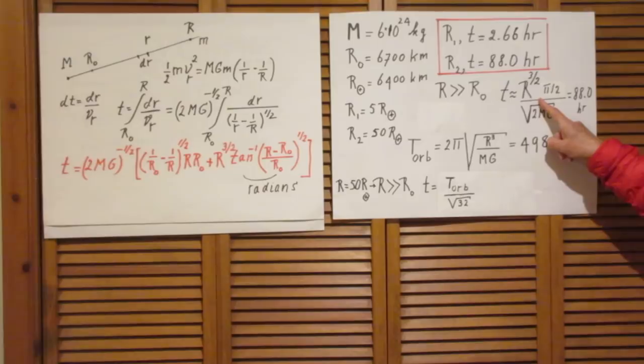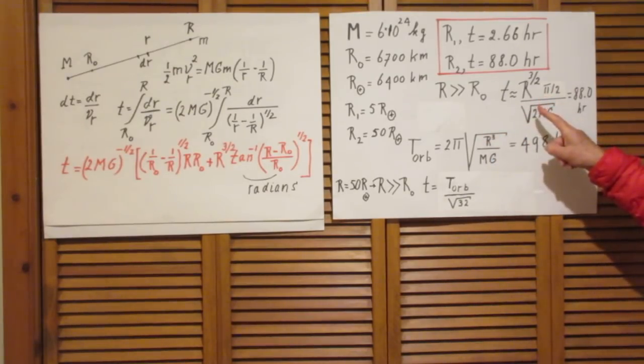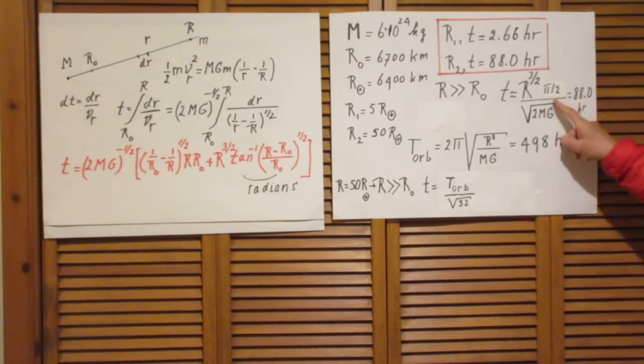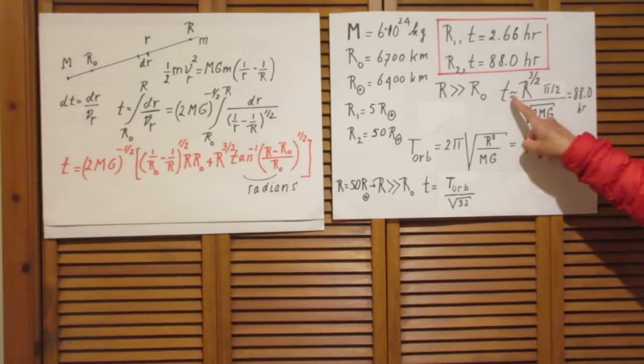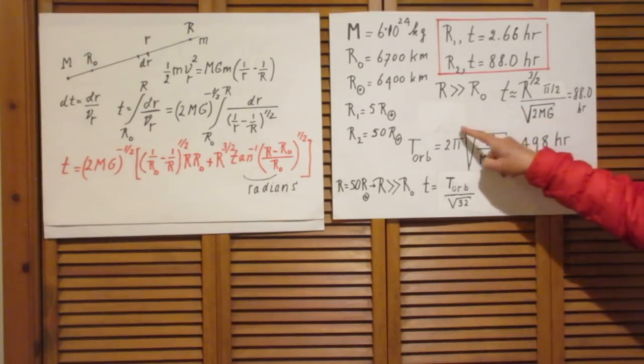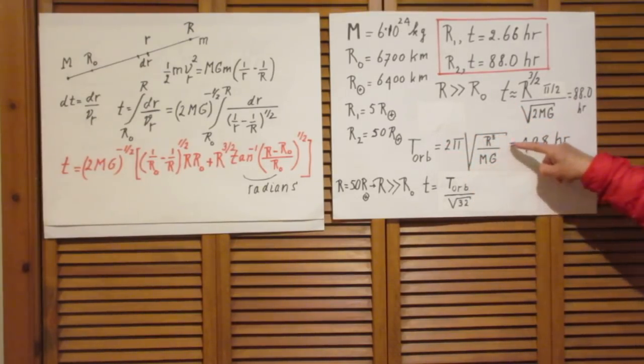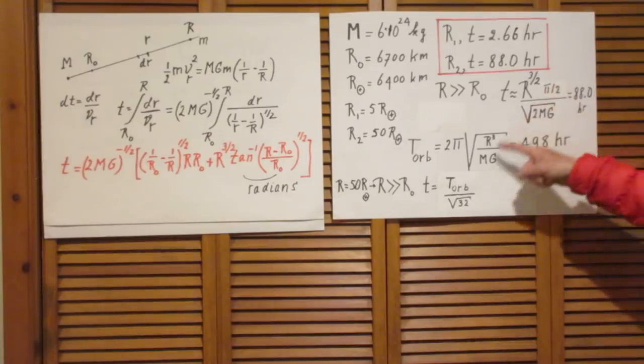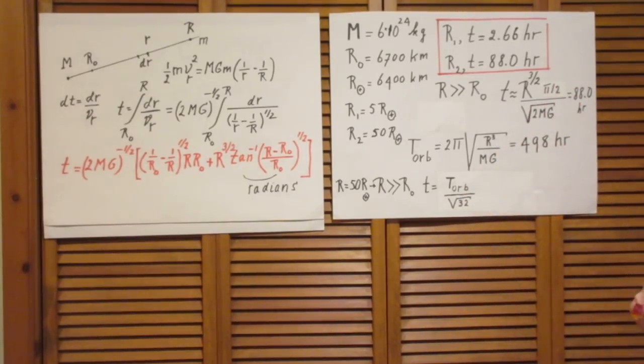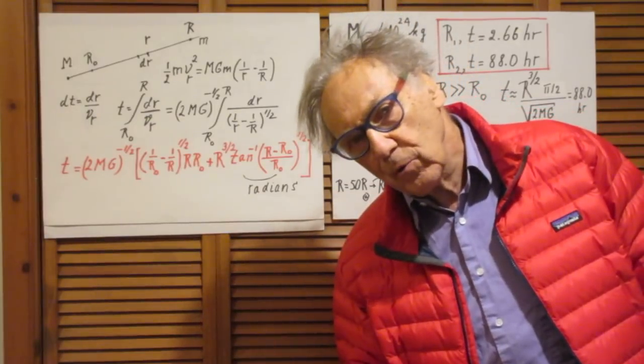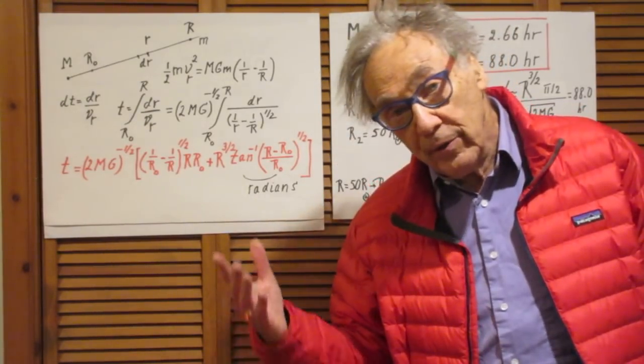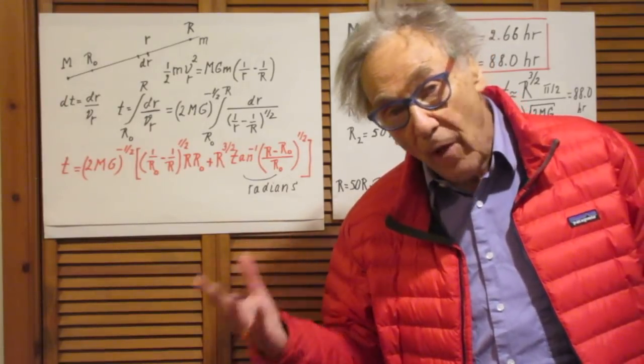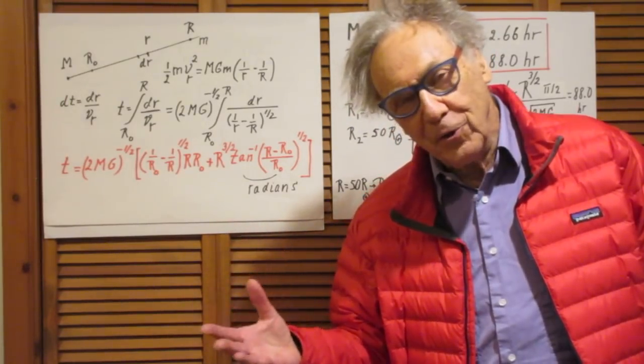Now compare this with that. And keep in mind, this is only valid if r is much, much larger than r0. But when that is the case, or to a high accuracy it is the case, then the freefall time is the orbital time divided by the square root of 32. You can convince yourself that in less than one minute that this is correct. And the only reason why I mention this square root of 32, because if you Google these freefall times, and I hope that many of you have done that, then this square root of 32 is often mentioned.